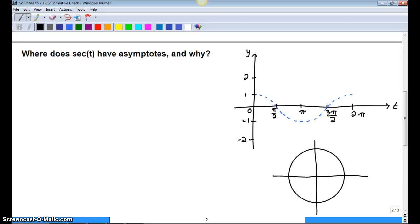Alright, I just want to go real quick through this one. Where does secant have asymptotes? And then I ask you why there are asymptotes at those points.